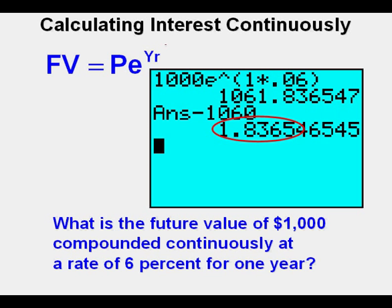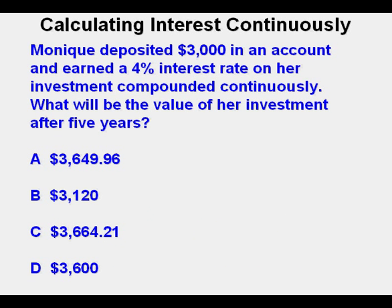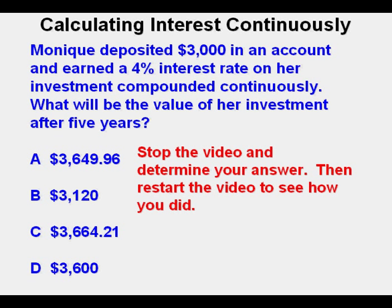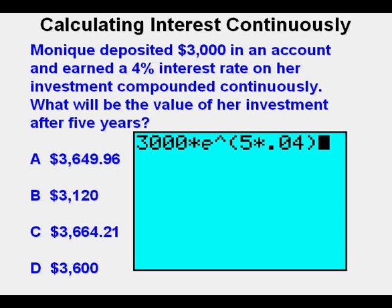Let's look at another problem, this time a multiple choice problem. Monique deposited $3,000 in an account and earned a 4% interest rate on her investment compounded continuously. What will be the value of her investment after 5 years? Stop the video and solve this problem, then restart after you have determined your answer choice. Just plug into the formula: 3,000 times e to the power of (5 times .04), press enter. We get $3,664.21 — answer choice C.